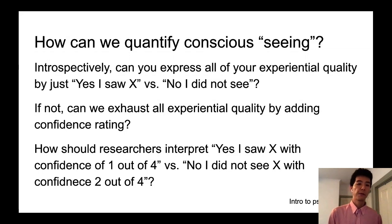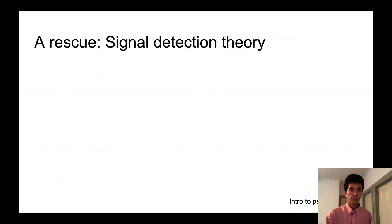Yes, I saw X with a confidence one out of four. Does it mean actually more visible than no, I didn't see X with a confidence two out of four. So this is the kind of problem still without any kind of framework.